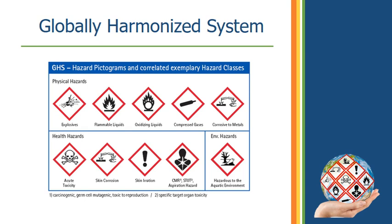There is also an OSHA quick card that compares the NFPA Diamond Labeling System to the HAZCOM 2012 or GHS Labeling System — they are one and the same, as OSHA incorporated the GHS and now calls it HAZCOM 2012. I want you to be familiar with this one. Note that the NFPA Diamond uses numbers from 0, which is almost no risk, to 4, which is the most risk — whereas the GHS numbers are opposite, with 1 being the highest risk and 4 being the lowest risk.